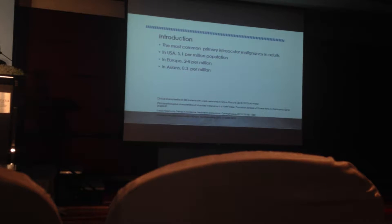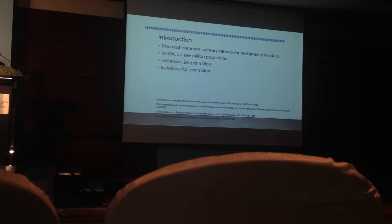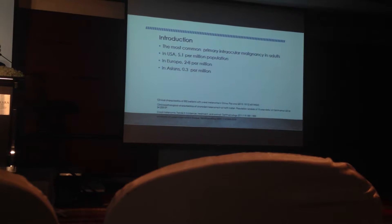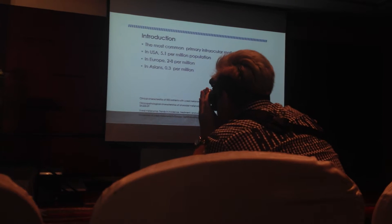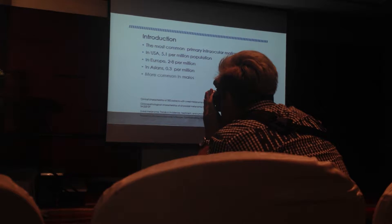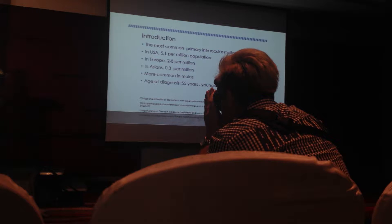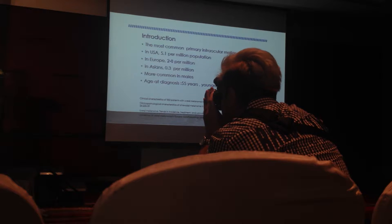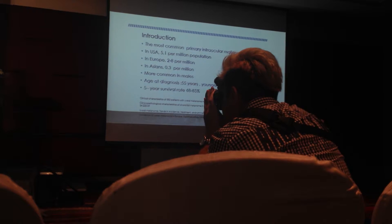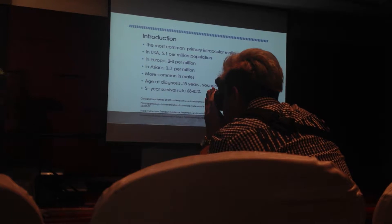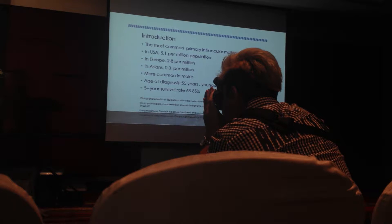The incidence in the USA is about 5 cases per median population and in Asians is about 0.3. It is also more common in males in Asians. There are some differences in age of diagnosis: in Caucasians, the mean age is about 55 years old, and in Asians about 10 years younger, around 45 years old. The five-year survival rate also differs — about 68% in Europe and in the United States, and about 85% in Asians.